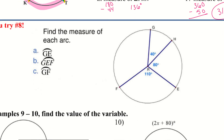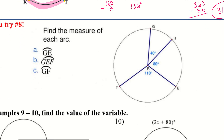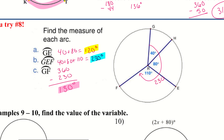I want you to go ahead and try number eight — pause the video and give it a shot. For the first two parts I was able to slowly add all the numbers together. Then for the last one I wanted arc GF: since I knew that was the only piece missing from the whole 360, I took out the 230 I knew to be left with my final answer.